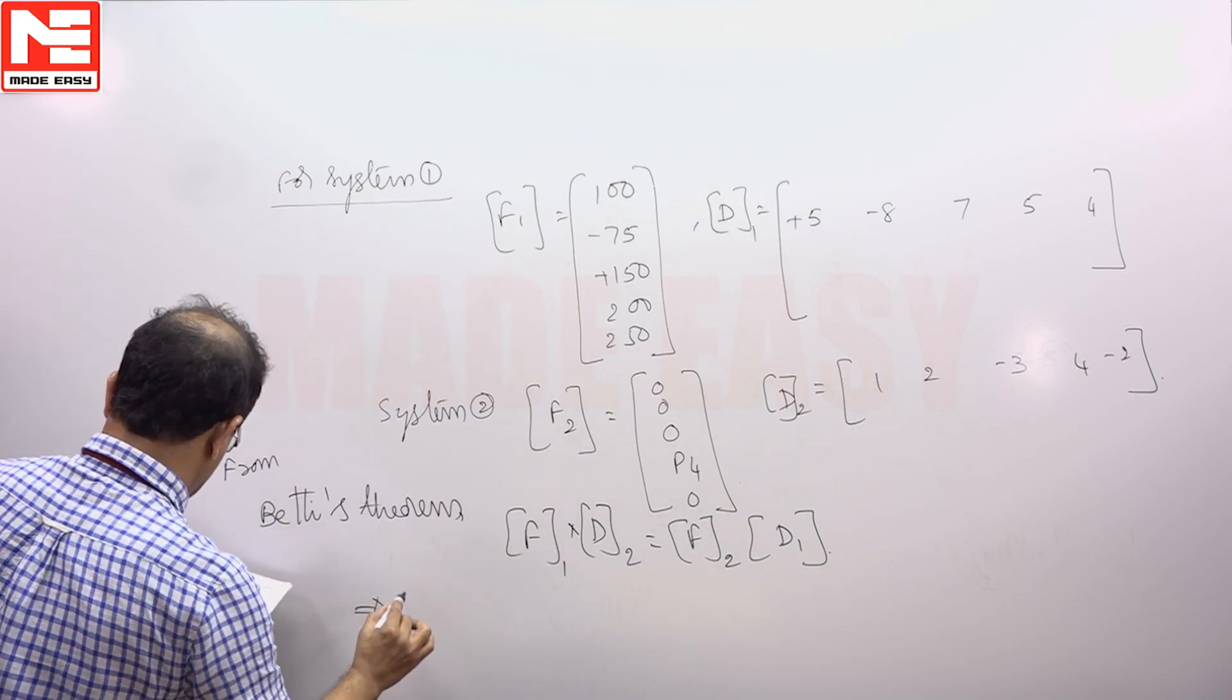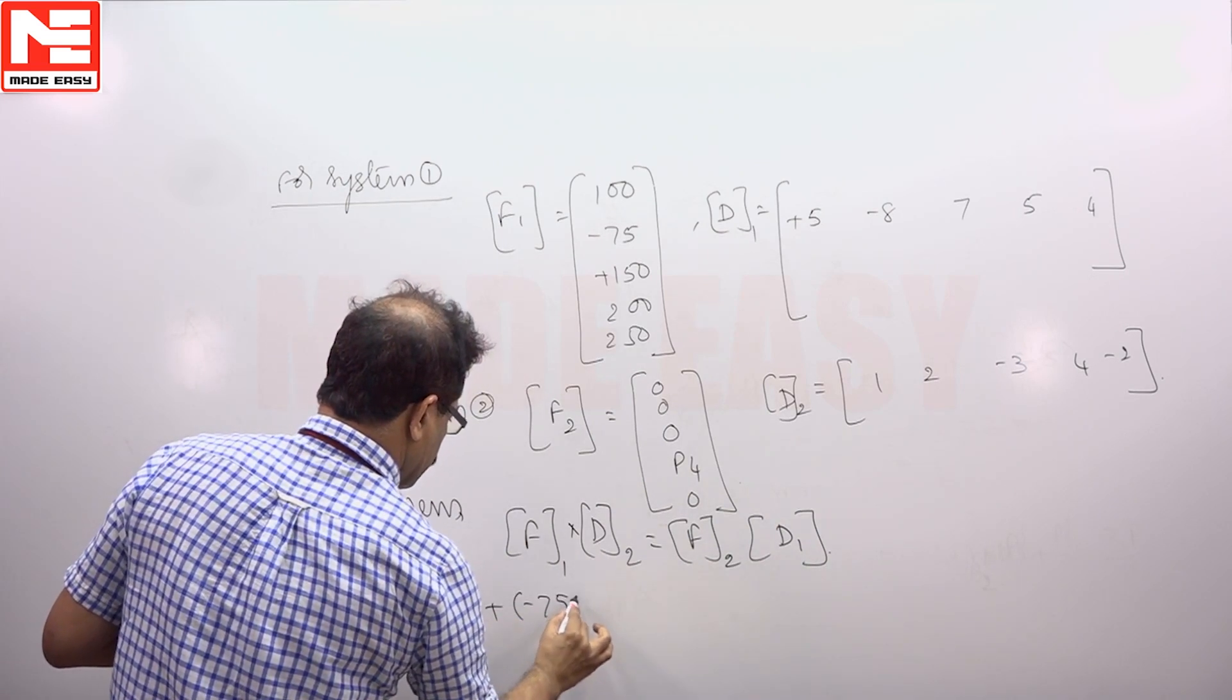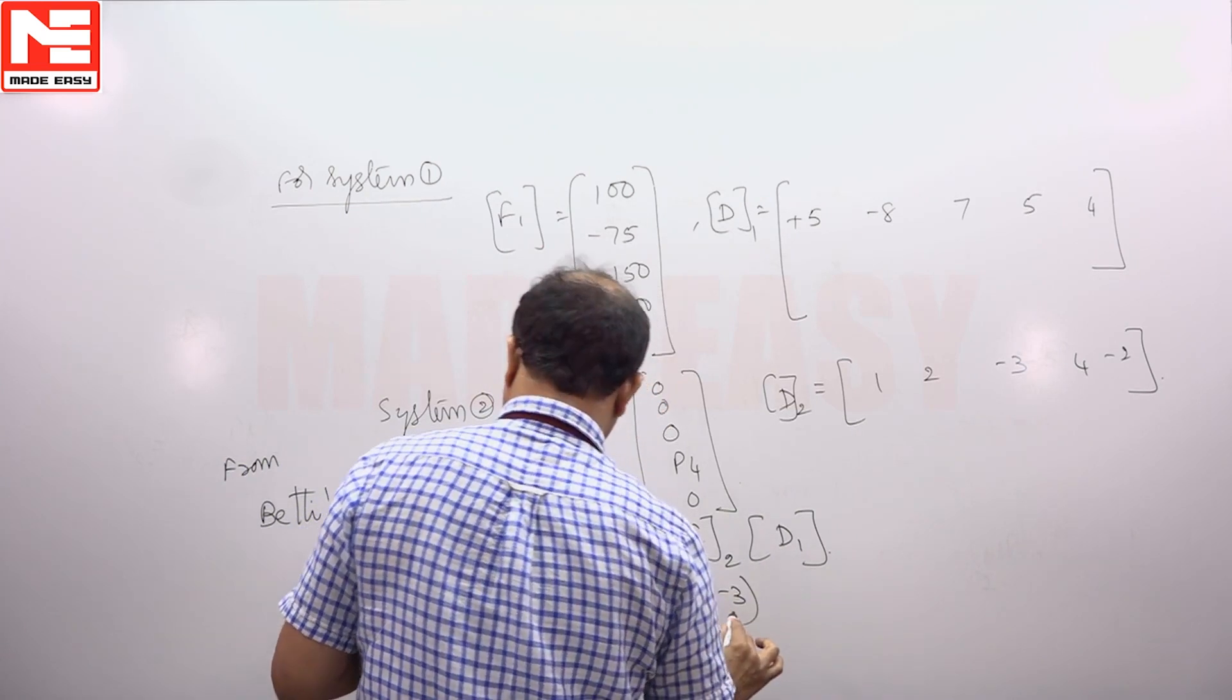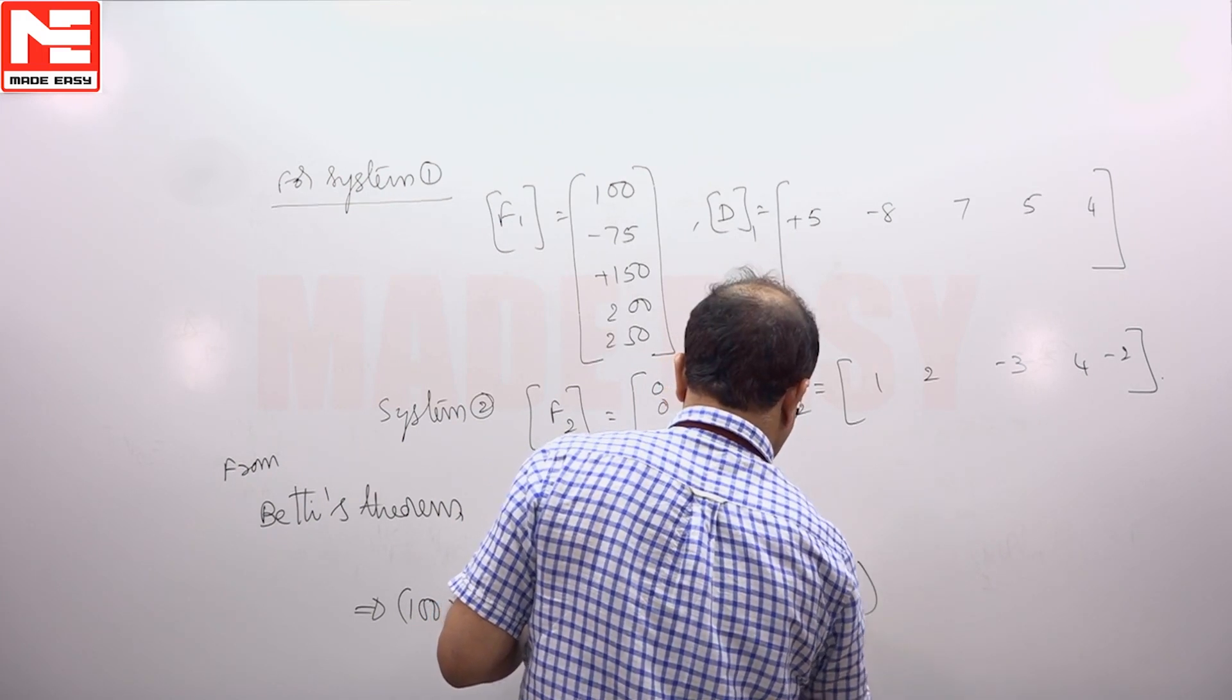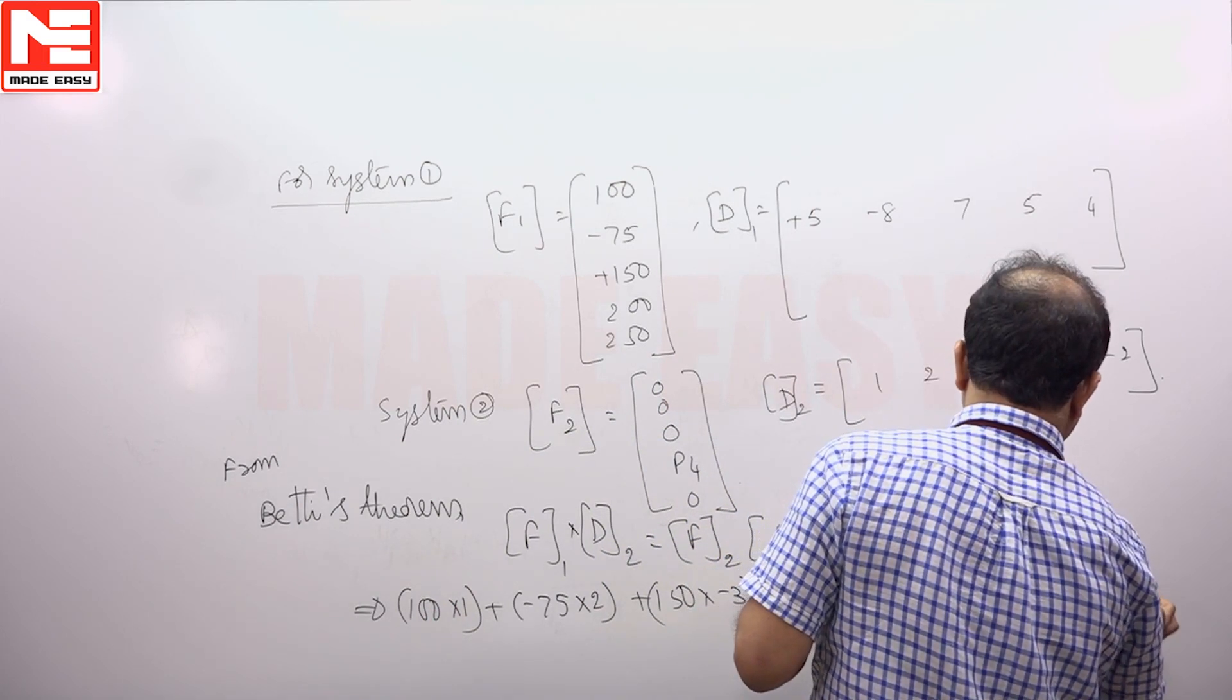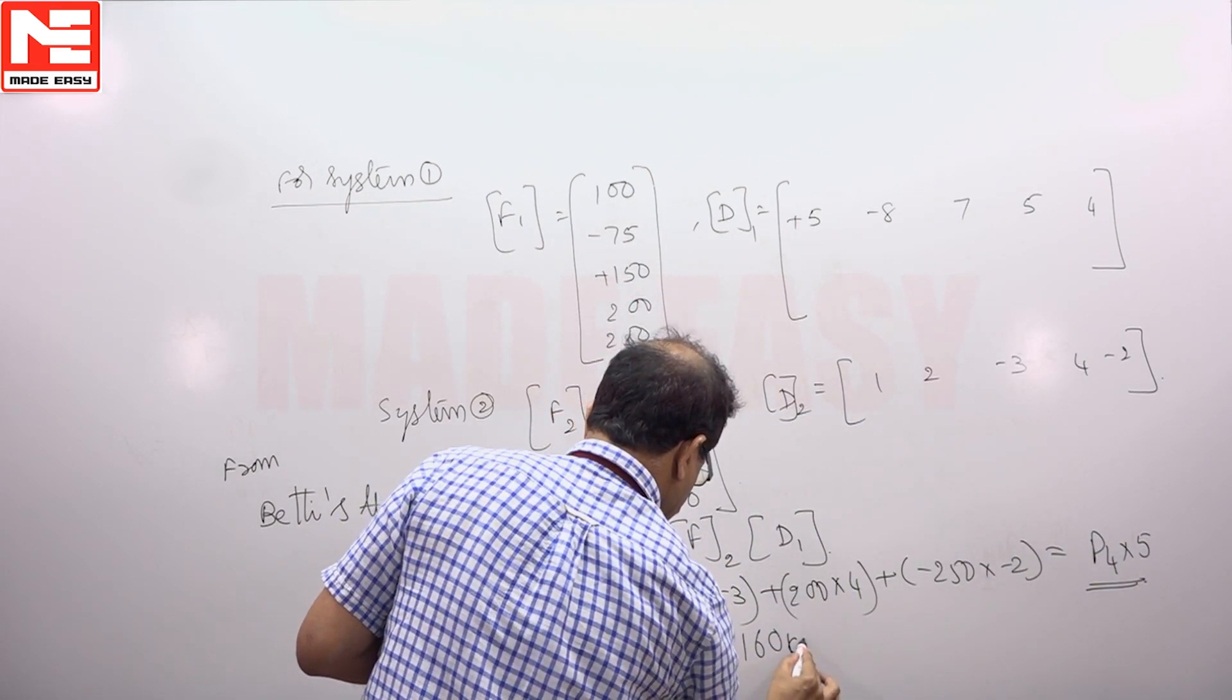So you will get F1: 100 into 1, plus minus 75 into 2, plus 150 into minus 3, plus 200 into 4, plus minus 250 into minus 2, is equal to P4 into corresponding deflection is 5. So P4 we will get 160 kilonewton.